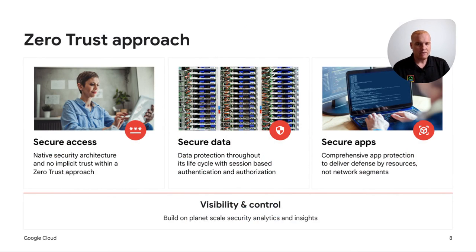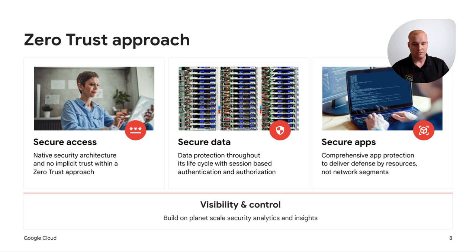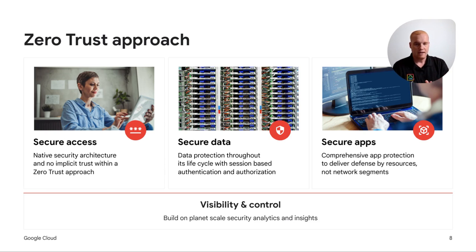The Zero Trust approach is grounded in secure access — no implicit trust is the key takeaway. We look to secure data throughout its lifecycle with session-based authentication and authorization. It's very important to assume breach, assume compromise, and limit the blast radius of an attack, whether from an external threat or a trusted insider through willful intent or negligence. We're working to secure applications with a comprehensive app framework to defend resources, not network segments. Grounding all of it is visibility and control. You need a security operations team with 24/7 eyes-on-glass responding to threats to be effective.